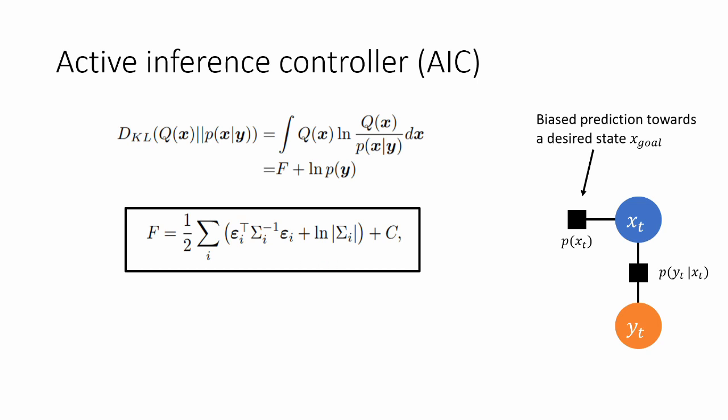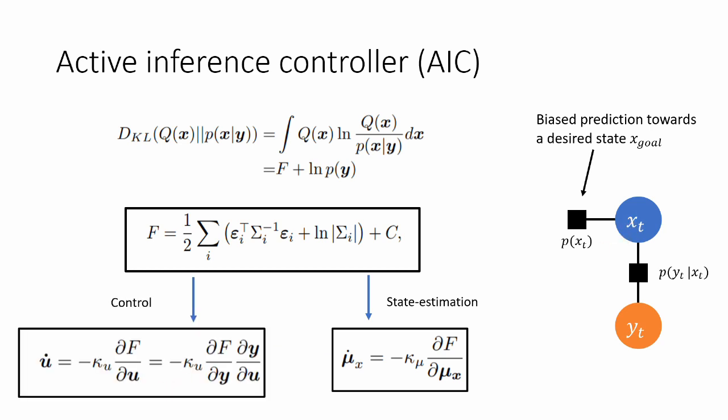So to achieve anything in this model, we minimize free energy with respect to the appropriate variables. To achieve state estimation, we minimize the free energy with respect to the beliefs. So mu of x is our belief over this variable x right here.